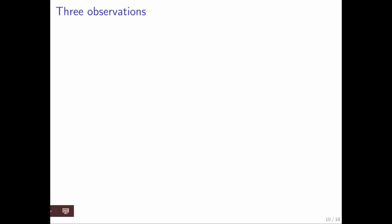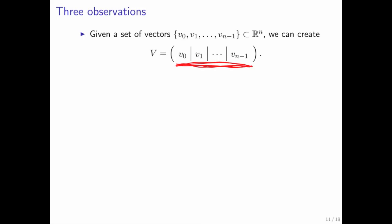What are the observations? You're given a set of vectors, and you all were taught to slice and dice matrices. And here, what we're doing is we're saying, look, we sometimes like to look at a collection of vectors as being the columns of a matrix V.